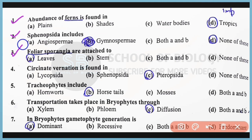Question Number 3: Foliar sporangia are attached to the leaves. The correct answer is Option A. Question Number 4: Circinate venation is found in Pteropsida, which is a class of Pteridophytes. The correct answer is Option C. Question Number 5: Tracheophytes include horse tails. Tracheophytes are the true vascular plants, and horse tails belong to Pteridophytes — they have vascular tissues. The correct answer is Option B.